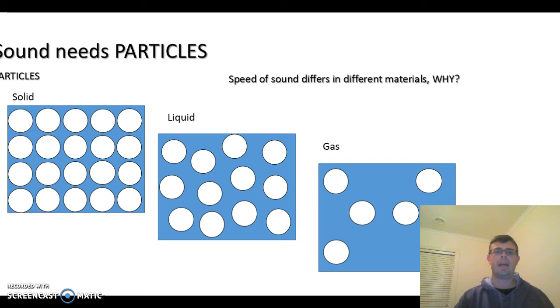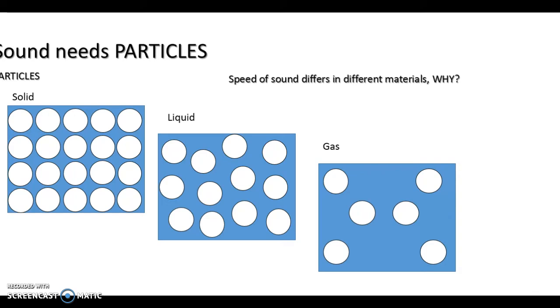So if we have a look here, we've got our three different particle models. You would have done this in year eight. So we've got our solid, our liquid and our gas. And this goes to why sound will move through liquid or solid quicker than it will in a gas. If I just get rid of my face here for a minute so you can see the gas.